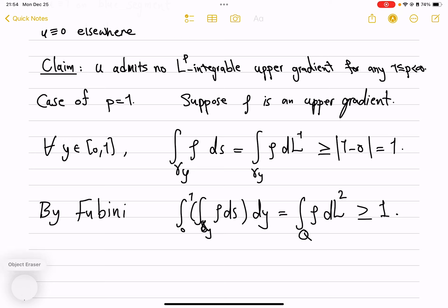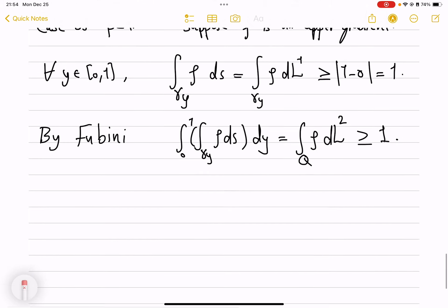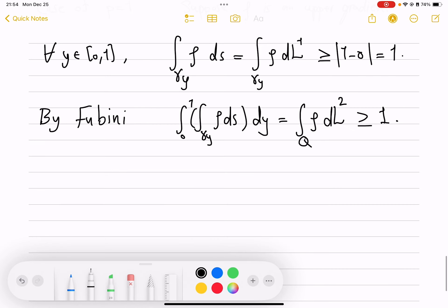When p was strictly bigger than 1, we used Holder's inequality here to get a contradiction by letting delta be small, we sent the LP integral to infinity. With p equal 1, that argument is not there. However, look at this observation.